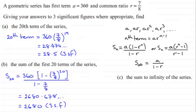So the sum to infinity is going to be equal to a, 360, divided by 1 minus r, 7/8. Work this out on your calculator and you get 2880.